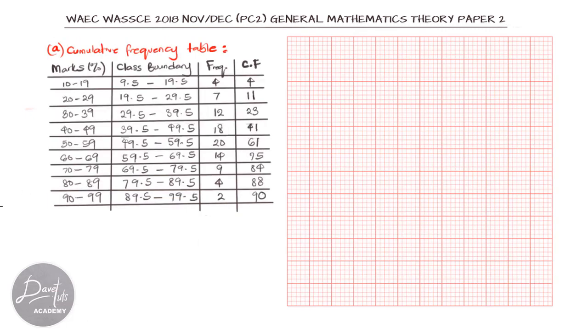We have gotten our cumulative frequency table. We can now go ahead to draw our cumulative frequency curve. On our graph, we'll plot the cumulative frequency against the marks that were obtained, but we're going to be using the class boundary for the marks, not just the mark that was given.